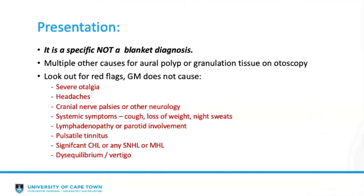Many other conditions can present with an aural polyp and similar otoscopic findings, so it is important to look out for red flags. Granular myringitis does not cause severe otalgia, headaches, cranial neuropathies, systemic symptoms such as cough, weight loss, or night sweats, associated lymphadenopathy, pulsatile tinnitus, moderate or severe conductive hearing loss, any sensorineural or mixed hearing loss, or any vestibulopathies, disequilibrium, or vertigo.